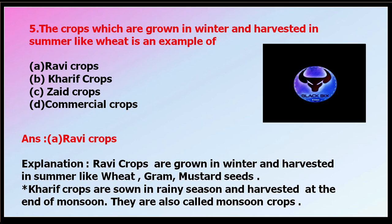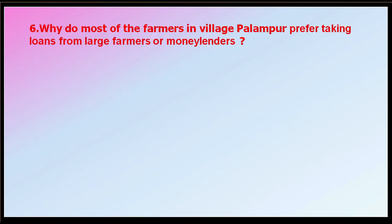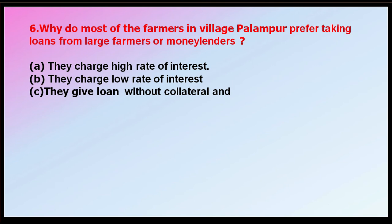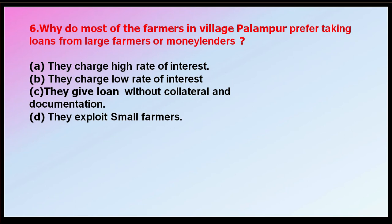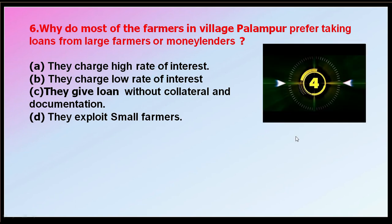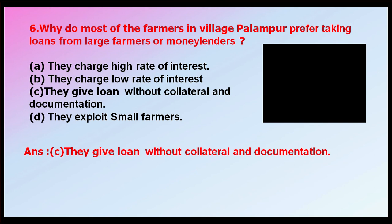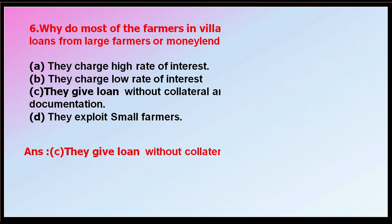Question number six: why do most farmers in village Palampur prefer taking loans from large farmers or money lenders? Options: they charge a high rate of interest; they charge a low rate of interest; they give loans without collateral and documentation; or they exploit farmers. The correct answer is they give loans without collateral and documentation. Banks and commercial institutions require collateral and have complex documentation processes, so farmers depend on large farmers and money lenders.